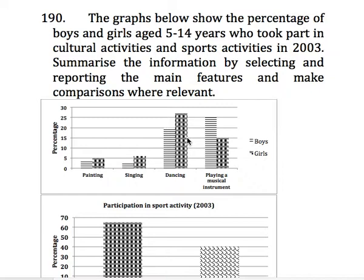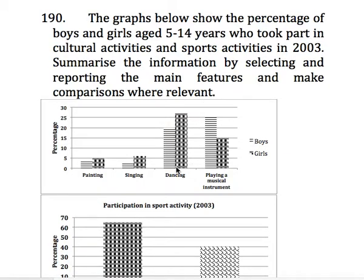I'm Kiran Makkar and today I'm going to discuss a graph which has been seen in the past in the academic IELTS writing test. There are two column graphs. The graphs below show the percentage of boys and girls aged 5 to 14 years who took part in cultural activities and sports activities in 2003. Summarize the information by selecting and reporting the main features and make comparisons where relevant.